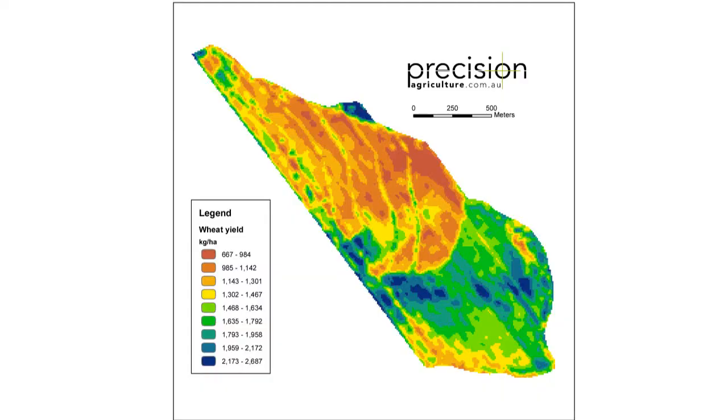Satellite imagery linking in with other spatial data sets is really important. We do a lot of work understanding other data sets and looking for relationships between the NDVI or the biomass maps we can produce through satellite imagery, and pH maps and also yield maps.